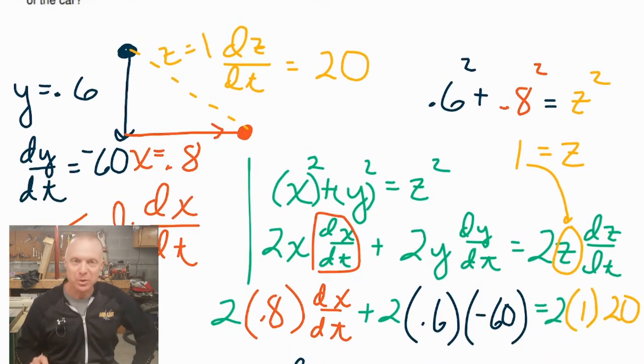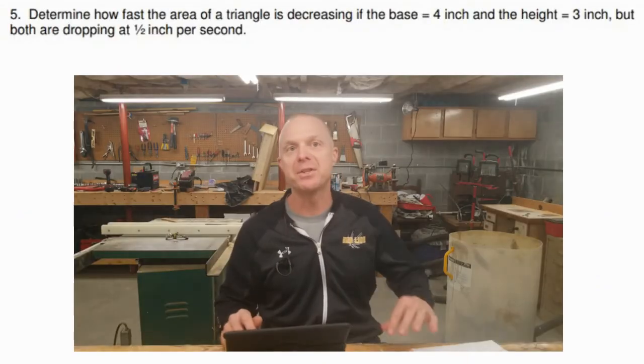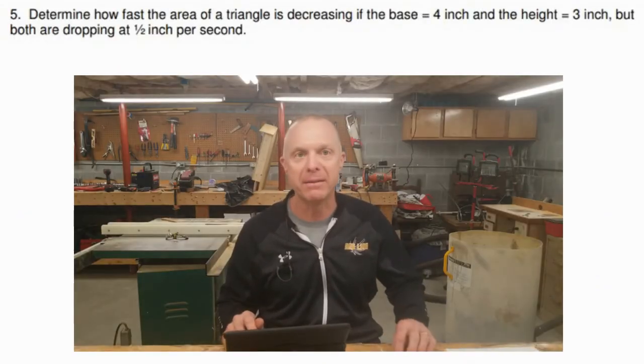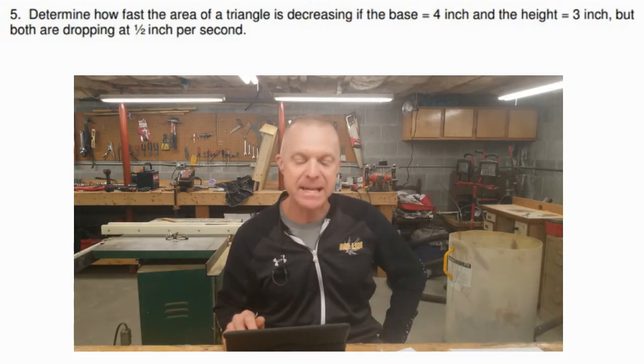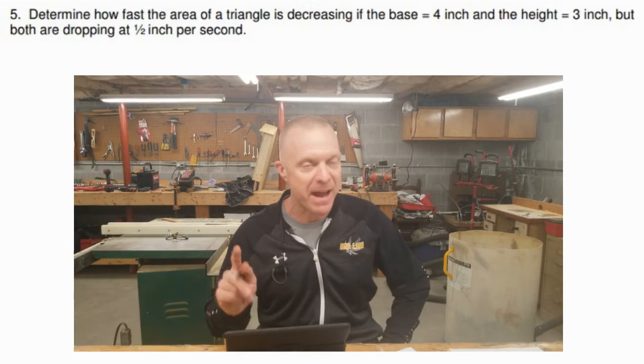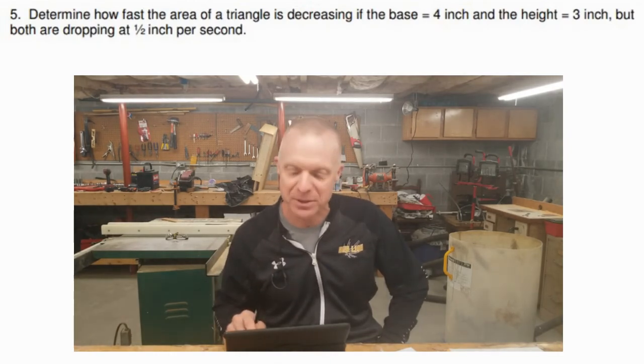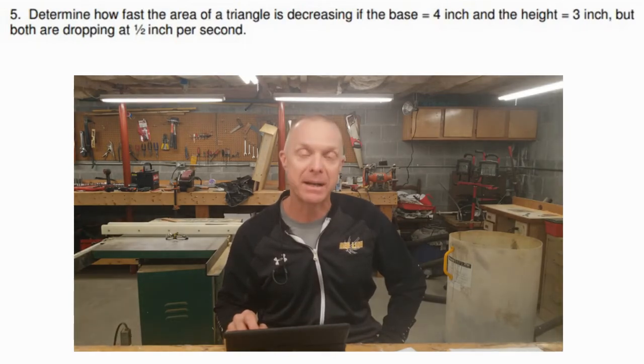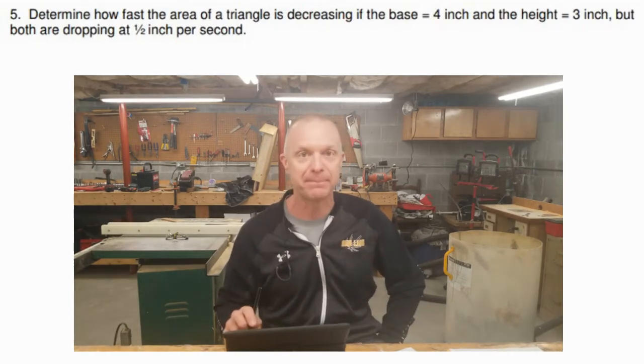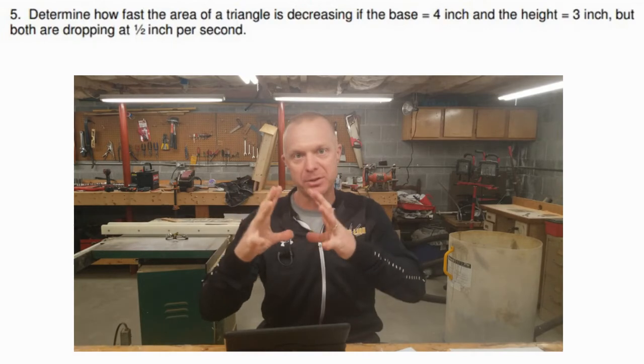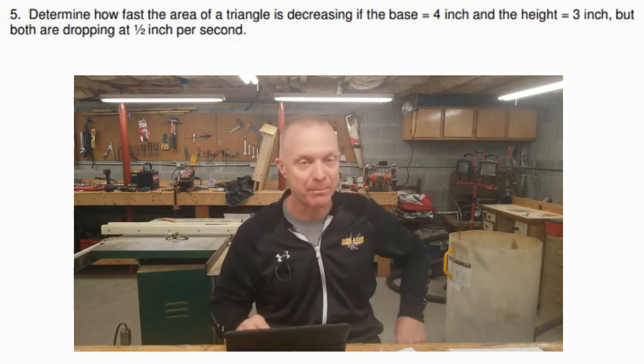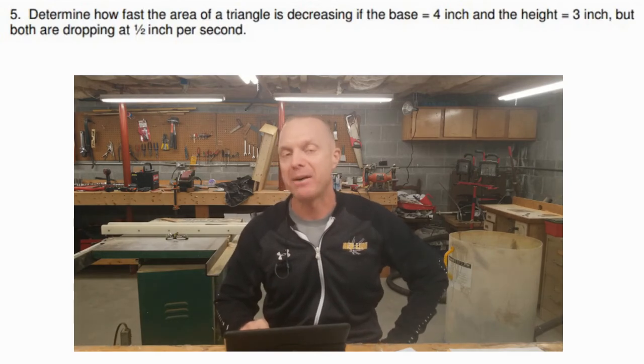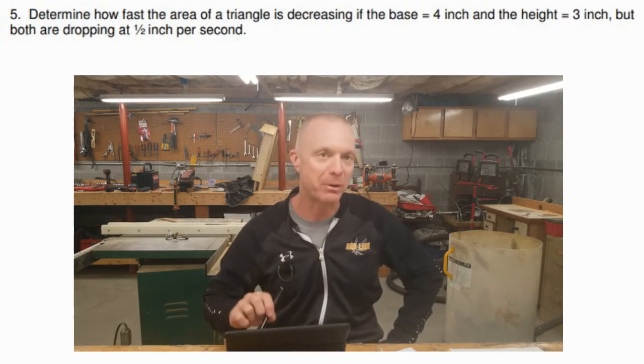Well, that leads us to the last problem. We're actually going to skip number four. So we'll call number five the last problem that we're going to do. It says that you're trying to figure out how fast the area of a triangle is decreasing. How fast is the area decreasing? If the base is four inches and the height is three inches, but both of those dimensions are dropping at a half inch per second. So we kind of get this idea of a triangle that is shrinking. Of course, we know how fast the height and base are shrinking, but what you want to do is figure out how fast the area is changing. Perfect related rates problem.